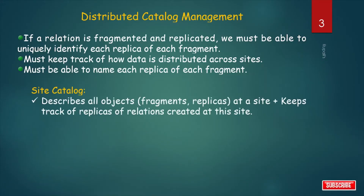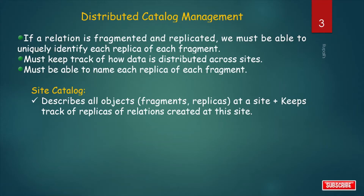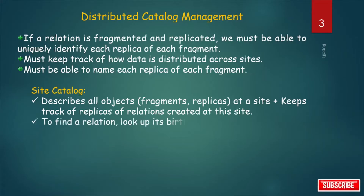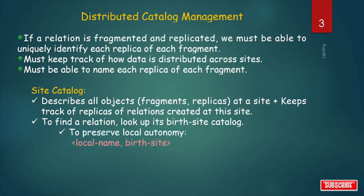A site catalog is created at a particular site. It describes all objects — all fragments and replicas — at that site, and keeps track of replicas of relations created there. To find the original relation of a fragment or replica, we look up its birth site catalog. So the site catalog preserves local autonomy, that is the local name and also the birth site.